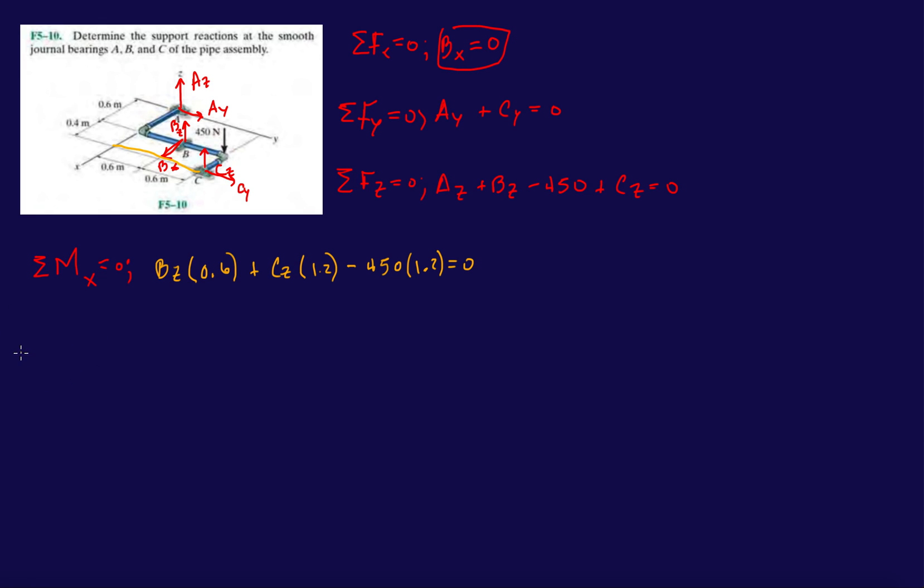So then let's do moments about the Y axis. Let's discard C_y, B_x and A_z, A_y. So let's do B_z times 0.6, and that'll be going clockwise, so negative. We have what else, 450, so plus 450 times 0.6. And then C_z, so minus C_z times 1.